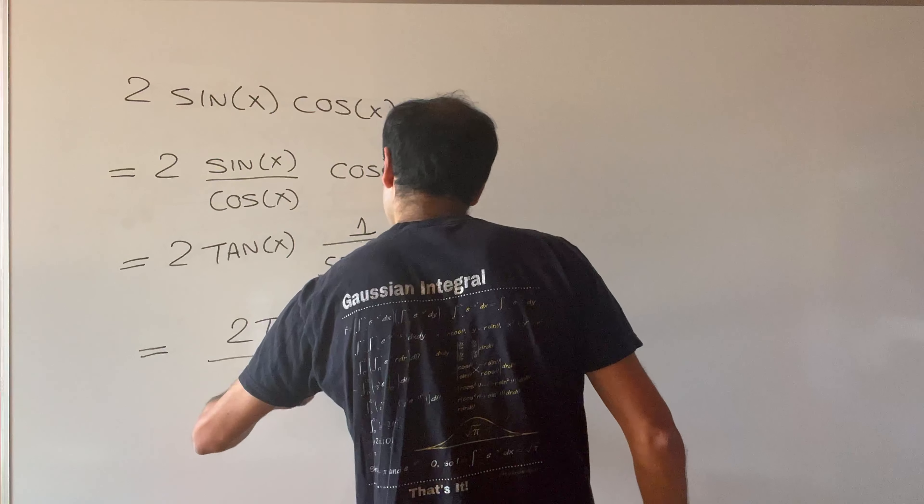Arctangent of minus infinity is minus pi over two, and arctangent of infinity is pi over two. So we end up with one over two square root of three times pi over two minus minus pi over two — which is precisely as delicious as pi. In the end, we get pi over two square root of three. How nice is that! I hope you liked this. If you want to see more math, please make sure to subscribe to my channel. Thank you very much.